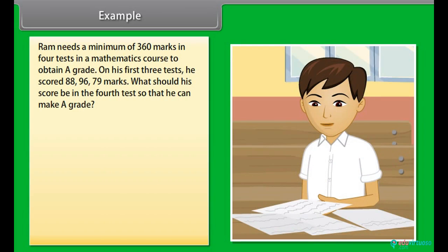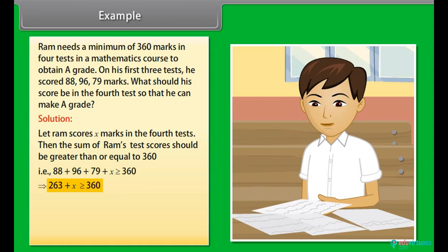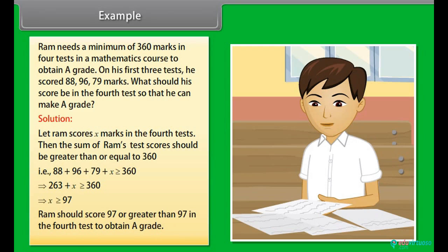Example: Ram needs a minimum of 360 marks in 4 tests in a mathematics course to obtain an A grade. On his first 3 tests he scored 88, 96, and 79 marks. What should his score be in the 4th test so that he can make an A grade? Solution: Let Ram score x marks in the 4th test. Then 88 plus 96 plus 79 plus x must be greater than or equal to 360. This implies 263 plus x ≥ 360, so x ≥ 97. Ram should score 97 or greater in the 4th test to obtain an A grade.